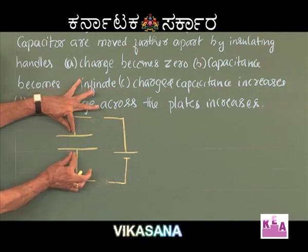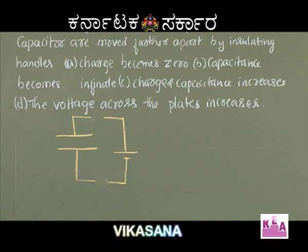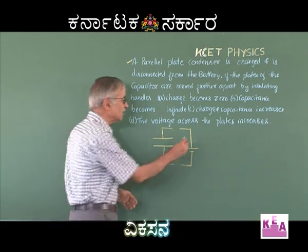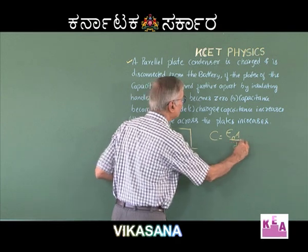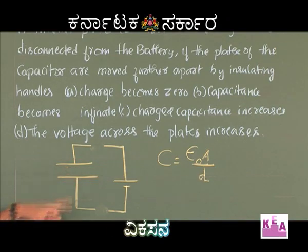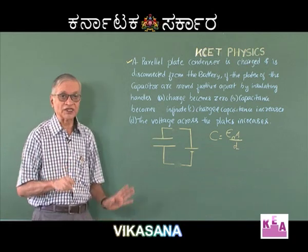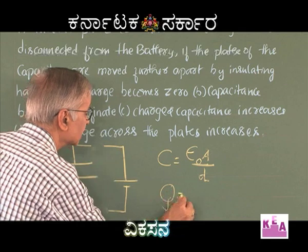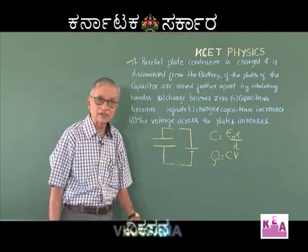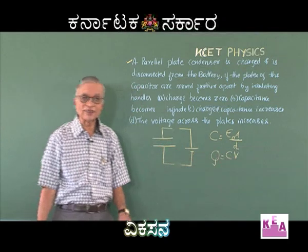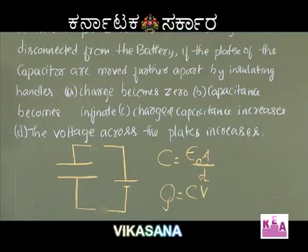Now, by the insulating handles, if you pull the plates apart, you know that capacity is given by the formula C = ε₀A/D. Therefore, when D increases, capacity decreases. You can agree that the charge in the condenser will not change. Consider Q = C × V. As mentioned, charge remains constant but capacity decreases. On account of that, the potential difference between the plates must increase. Hence, the right option is D — voltage across the plates increases.